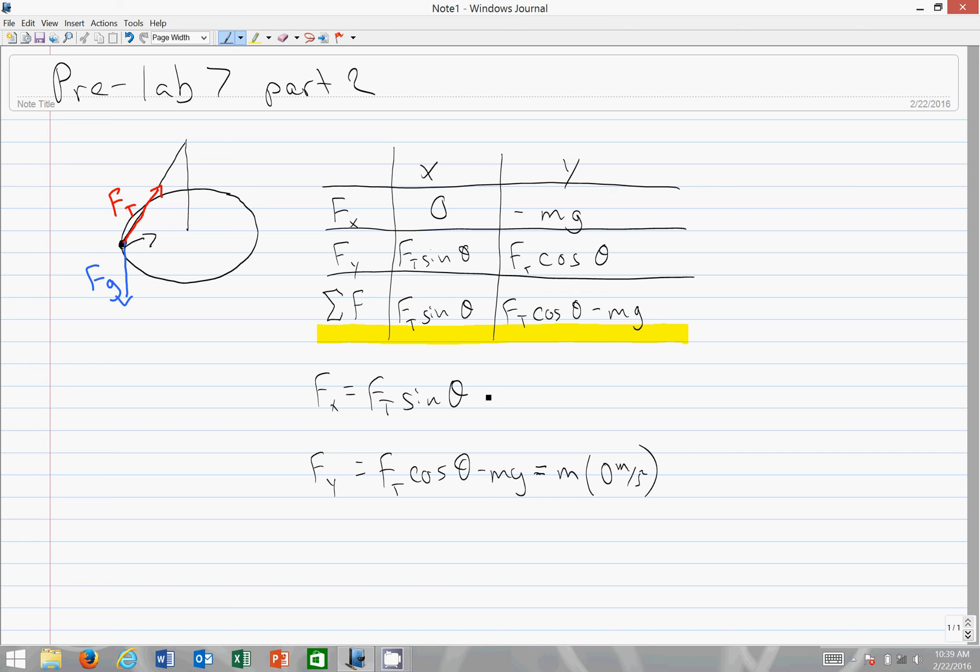And in our X equation it's actually equal to MA, which in this case is centripetal, and we will define that as M times V squared over R.